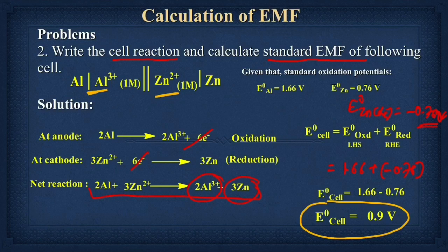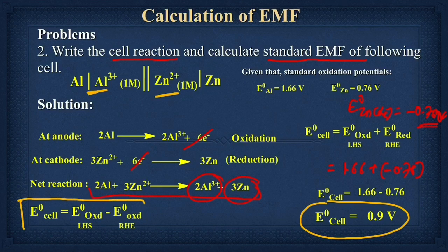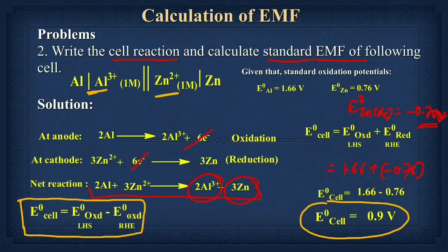If you directly want to calculate using both oxidation values, there is no need to convert. You can use this formula directly: E°_cell = E°_oxidation (left) − E°_oxidation (right). You can get the value directly with no need to change the sign. This is all about the EMF calculation when both values are given in oxidation potential.